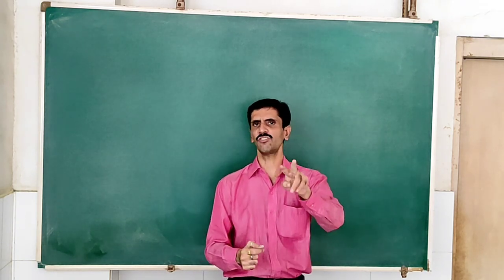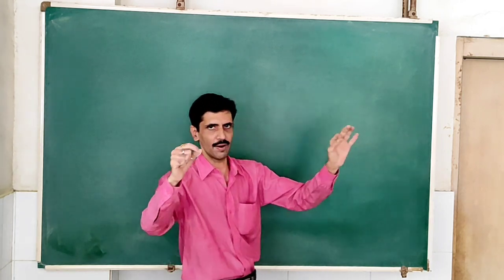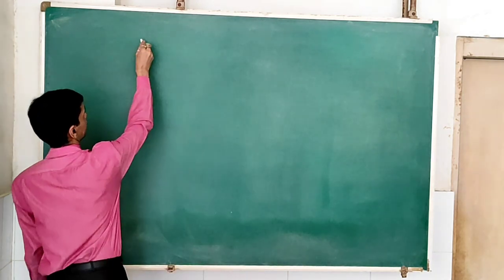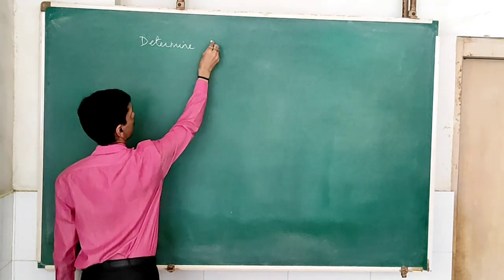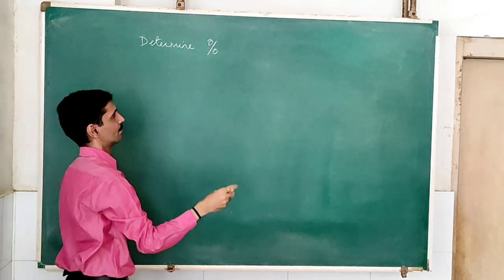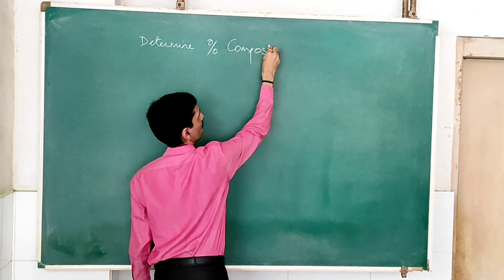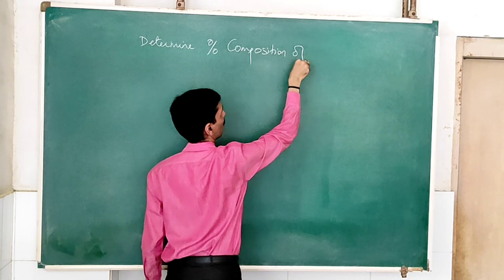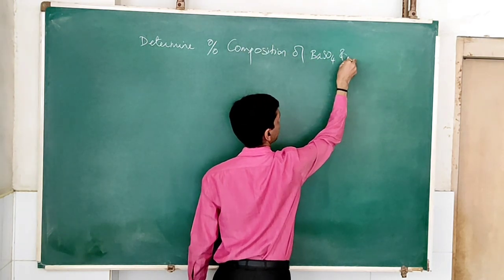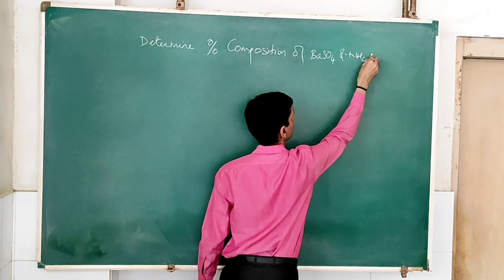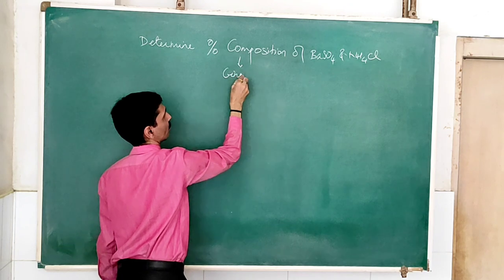What are those two components? It is barium sulfate and ammonium chloride. So the aim of the experiment is to determine the percentage composition of barium sulfate and ammonium chloride present in the given mixture.